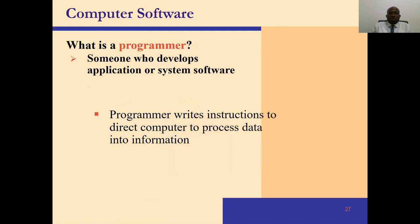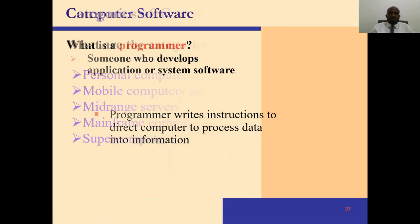A programmer is someone who develops an application — they write computer instructions to direct the computer how to process data into information. The person who writes computer programs is called a programmer. Let's look at some categories of computers: we have personal computers, mobile computers or mobile devices, mid-range servers, mainframe computers, and supercomputers.